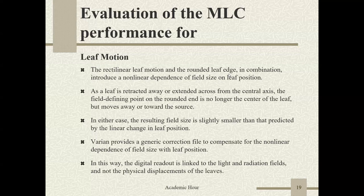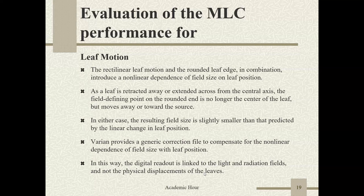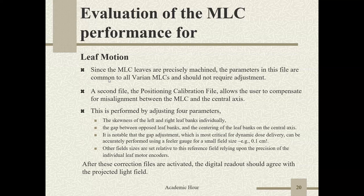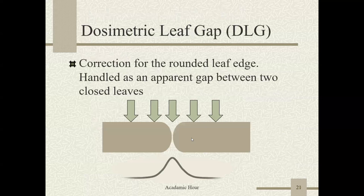The rectilinear leaf motion and the round field edge in combination introduce a non-linear dependence of field size on leaf position. As the leaf is retracted or extended across the central axis, the field-defining point on the rounded edge moves away from or toward the source. The resulting field size is slightly smaller than that predicted by the linear change in leaf position. Varian provides a generic correction file to compensate for this non-linear dependence, linking the digital readout to the light and radiation field. A second positioning calibration file allows the user to compensate for misalignment between the MLC and the central axis.